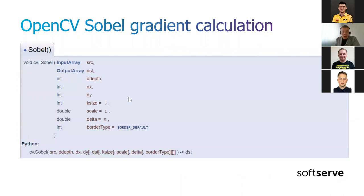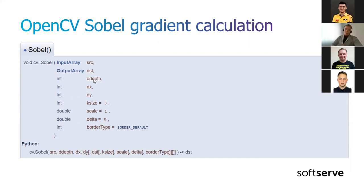How does OpenCV calculate it? There's the method called cv::Sobel, which takes an input, an output, and some additional parameters. The problem with this OpenCV method is that it cannot calculate both gradients at once — we need to call it twice for separate calculations. That's a problem because in many places we need both gradients at once, and there is a clear way to speed this up from the initial idea.